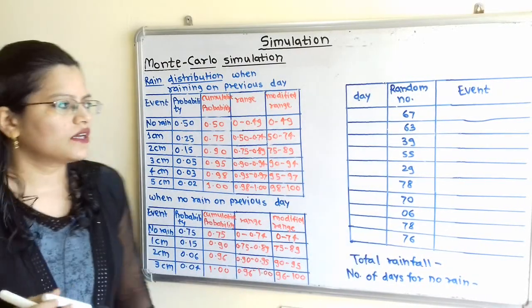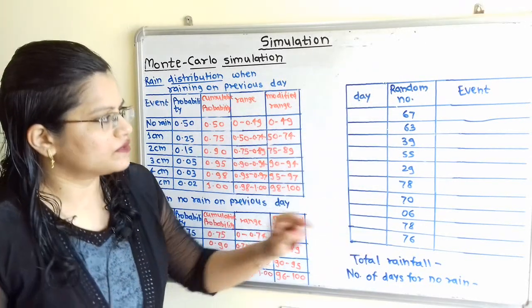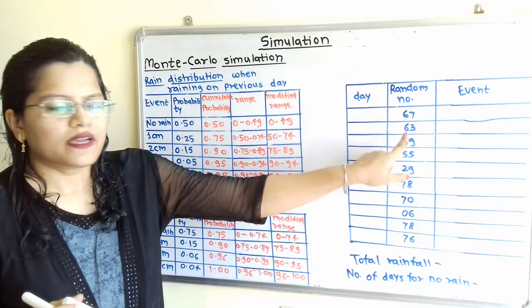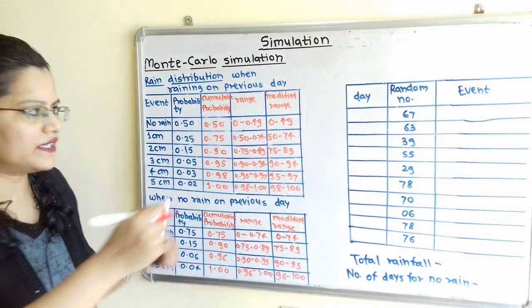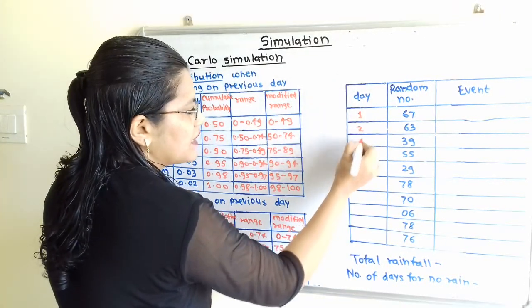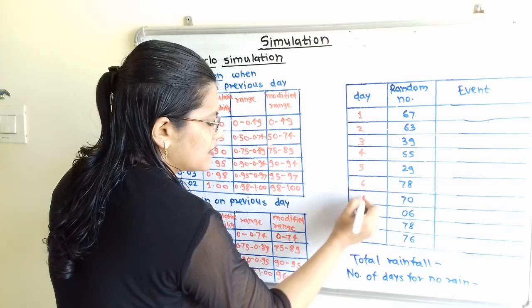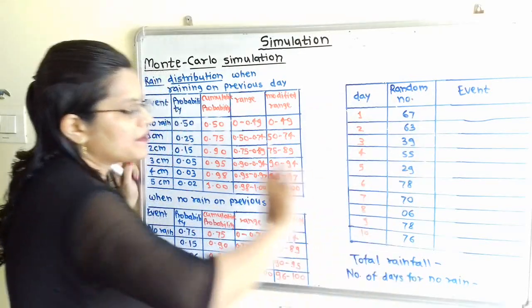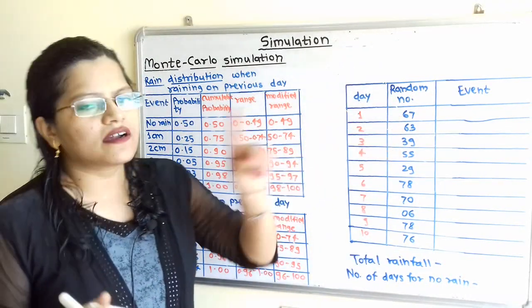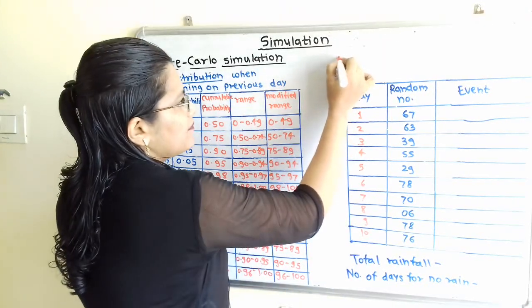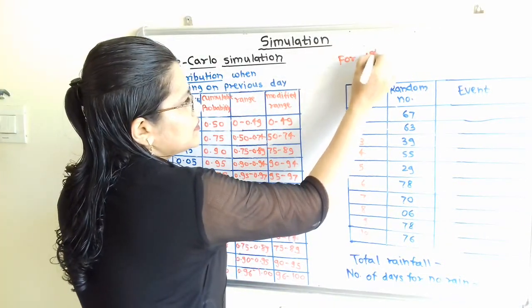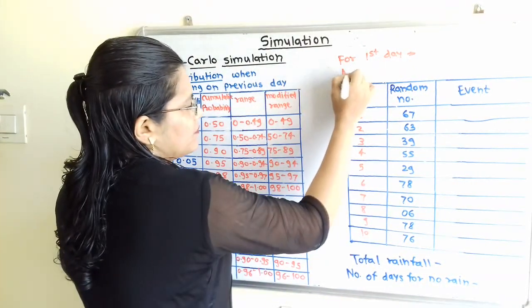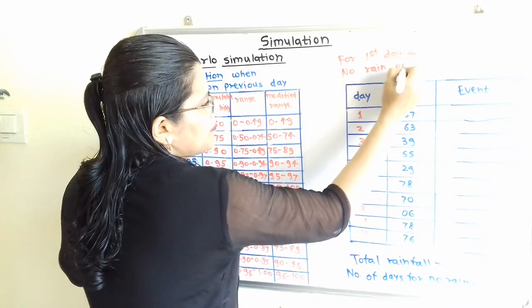Now we will move to the next step. The 10 random numbers are given for 10 days. I will write: first day, second day, third, fourth, fifth, sixth, seventh, eighth, ninth, tenth. For the first day, the condition is given in the question: no rain on the previous day.